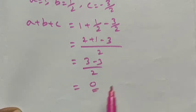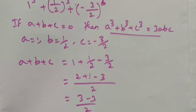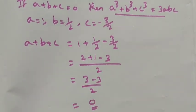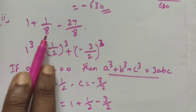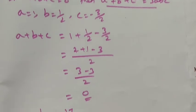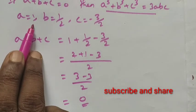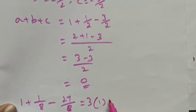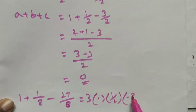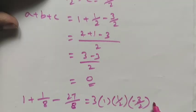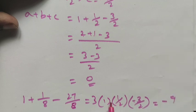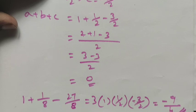Since the sum is 0, we apply the formula a cube plus b cube plus c cube equals 3abc. So 1 plus 1 by 8 minus 27 divided by 8 equals 3 times a times b times c, where a is 1, b is 1 by 2, and c is minus 3 by 2. That gives 3 times 1 times 1 by 2 times minus 3 by 2. Multiplying: 3 times minus 3 is minus 9, and 2 times 2 is 4. So the answer is minus 9 divided by 4.